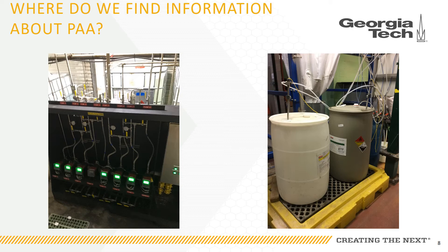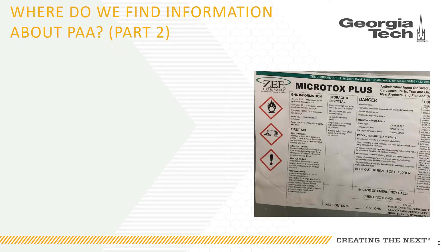You can start by reading the label on the container used to store the undiluted form of the chemical. For PAA, this may be a tote, a tank, or even a small plastic container. This slide shows two different ways the concentrated form of PAA is brought into a facility and then pumped throughout the plant in pipes or hoses, usually diluted with water. You can also ask to read the safety data sheet for the chemical being used. You may see large diamond-shaped red outlined images on either the container labels or in the safety data sheets — these images are called pictograms, and they represent the main hazards posed by any chemical.